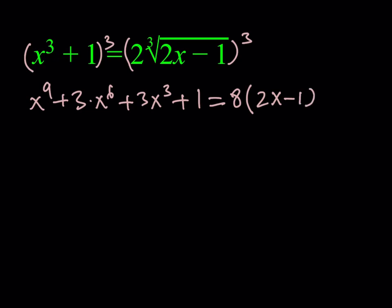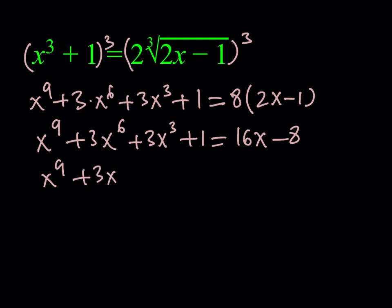Let's simplify this and put everything on the same side. I should be getting x to the 9th power plus 3x to the 6th power plus 3x to the 3rd plus 1 equals 16x minus 8. Then let's combine like terms. We can't really combine them because they're all different in powers, but one thing we can do is add 1 plus 8, which gives us a 9.